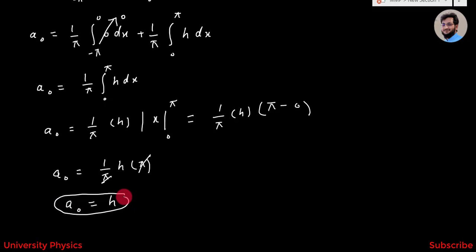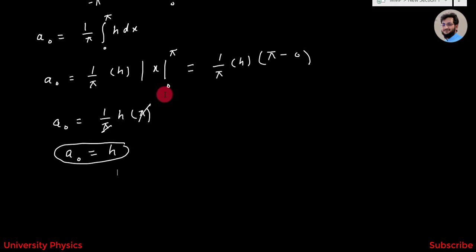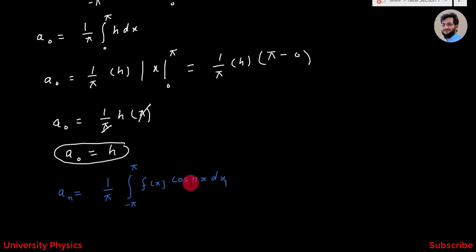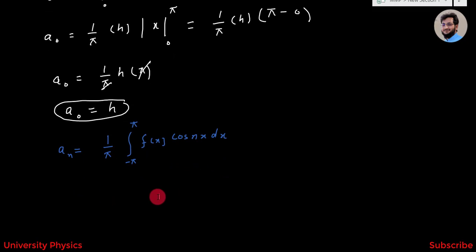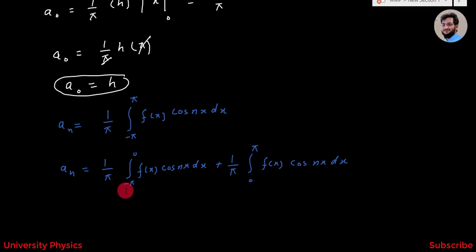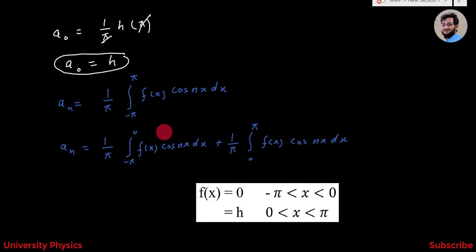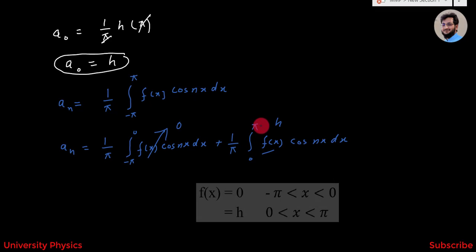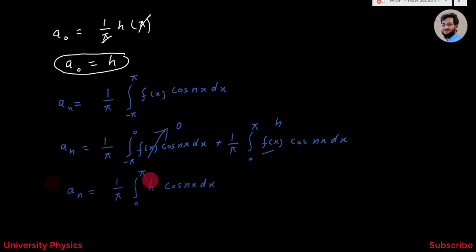Now we find aN. We know that aN = (1/π) ∫ from -π to π f(x) cos(nx) dx. This can be written as aN = (1/π) ∫ from -π to 0 f(x) cos(nx) dx + (1/π) ∫ from 0 to π f(x) cos(nx) dx. The first term is 0 because f(x) = 0 from -π to 0, and f(x) = h from 0 to π, so aN = (1/π) ∫ from 0 to π h cos(nx) dx.